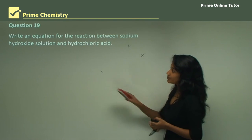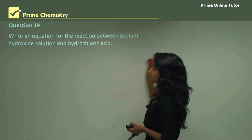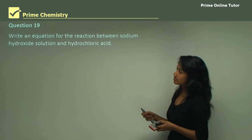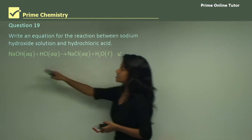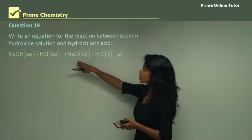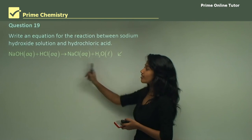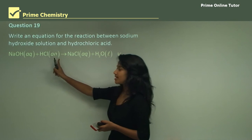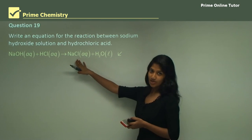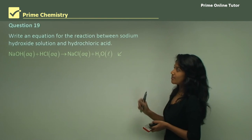Question 19: write an equation for the reaction between sodium hydroxide solution and hydrochloric acid. Simply write: NaOH (aq) + HCl (aq) → NaCl (aq) + H₂O (l). Balance the equation and include state symbols — acids and bases are aqueous solutions, the salt is aqueous, and water is a liquid.